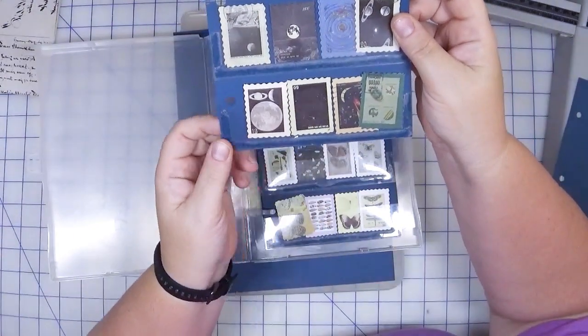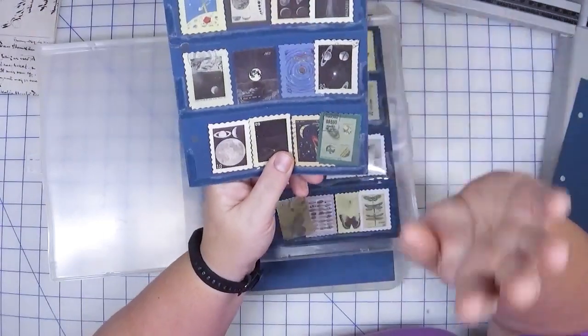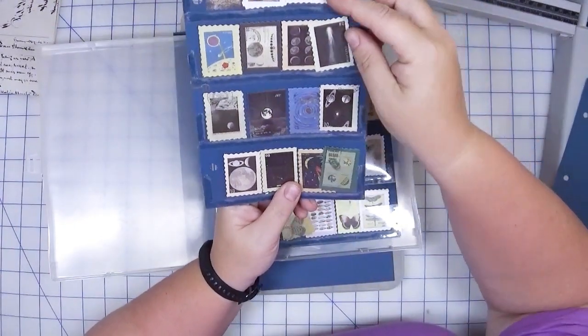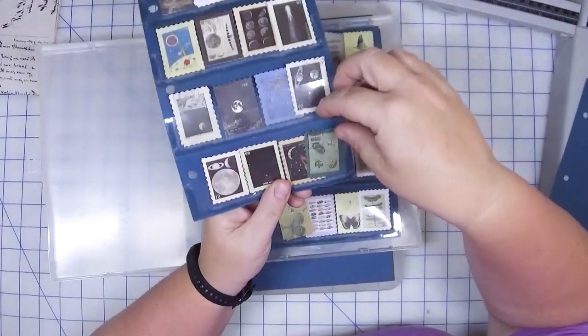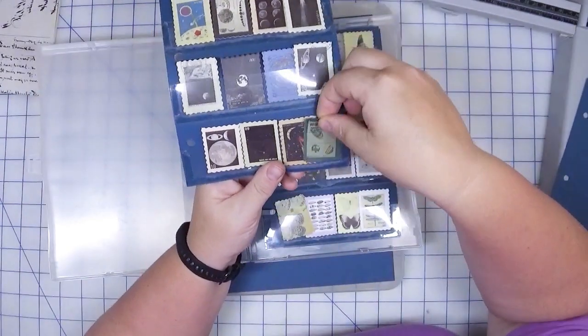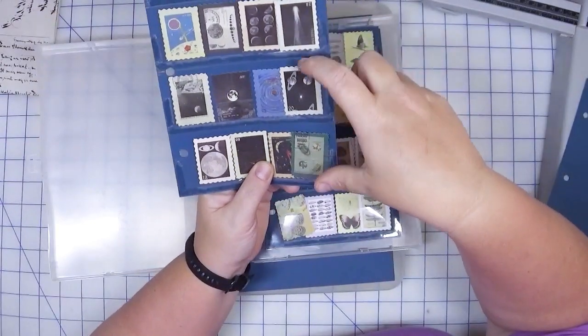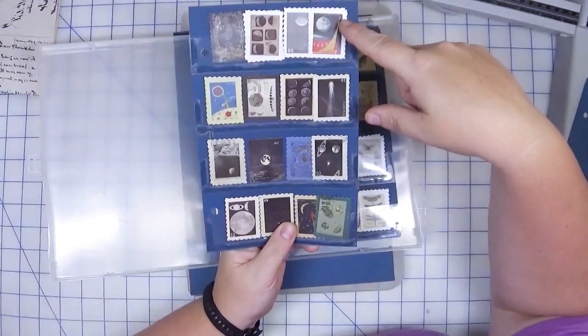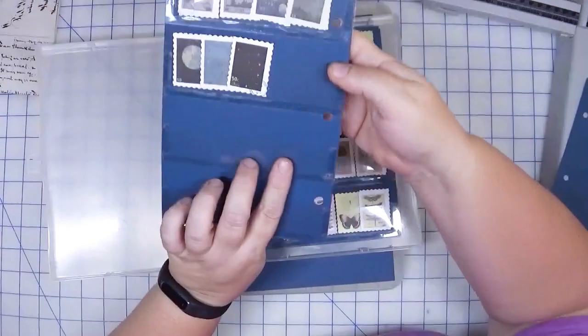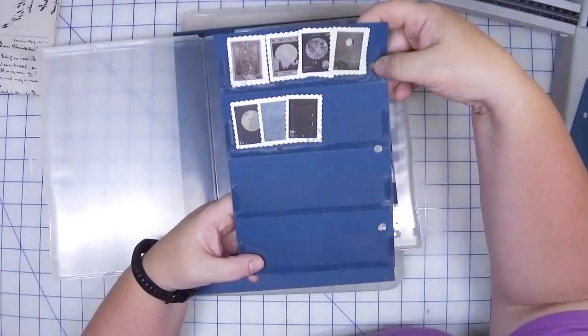Then I used some double-sided sticky tape to adhere them. You can see the tape, it doesn't bother me. If it bothers you, you could sew instead, but that just seemed like way too much work. They just become pockets that I can slide these embellishments in and out. If you have larger items, don't put as many pockets on a page. I have four rows and then I also have four rows on the back side.